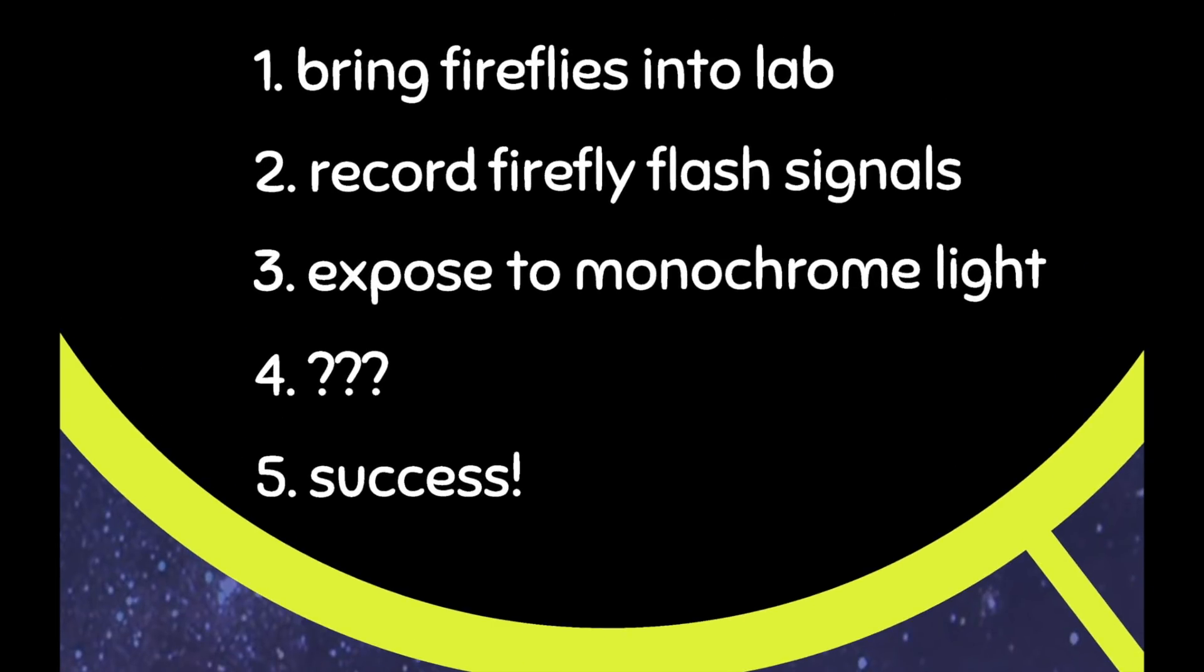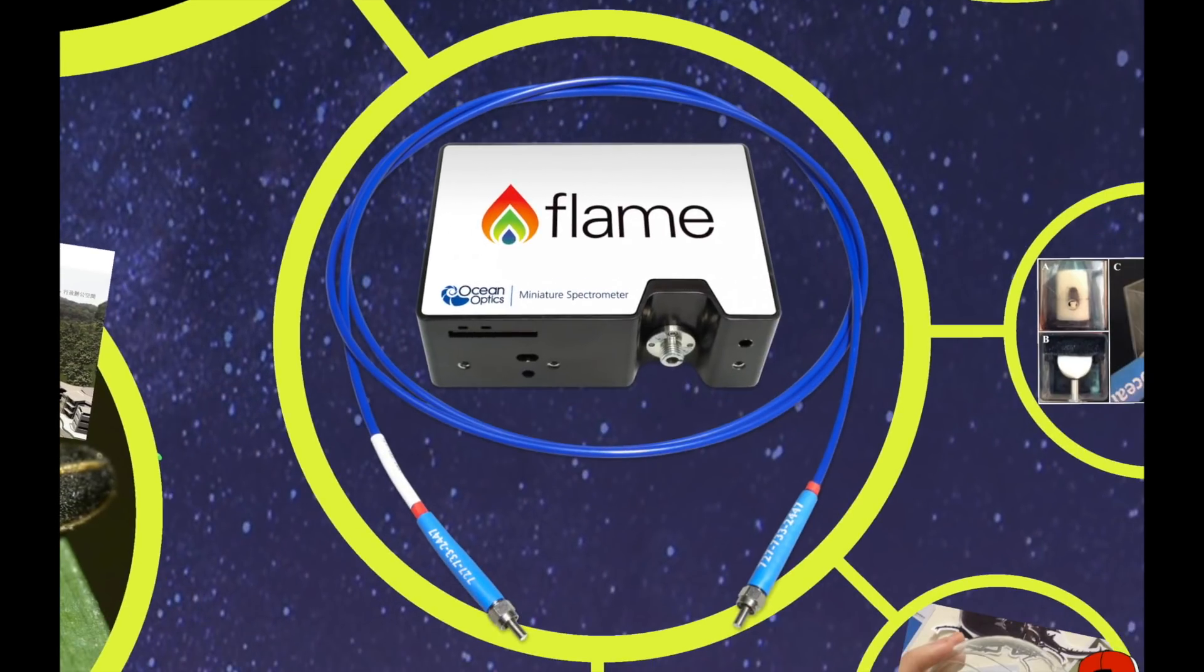Now, how do we record firefly flash signals? This is actually not easy at all. We had this piece of equipment called a spectrometer, which is a very nice thing that you use to measure light. It's extremely sensitive. It can give you all sorts of information, but it needs to be put right up against the light source. Now, if your light source is alive, that's a little bit more difficult.